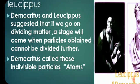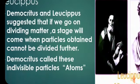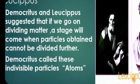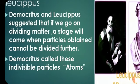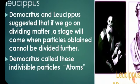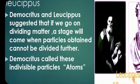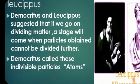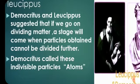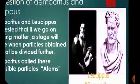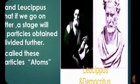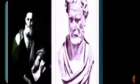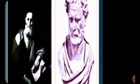If we go on dividing matter, a stage will come when particles obtained cannot be divided further — meaning if we divide matter, a time comes after which divisibility becomes nil, matter cannot be divided further. Democritus called these indivisible particles atoms. In the photo both Leucippus and Democritus are visible. Democritus gave the name 'atom'.